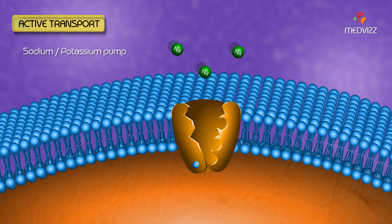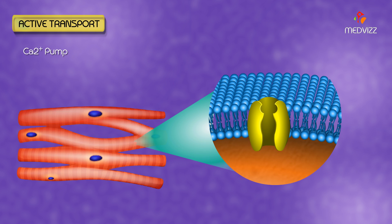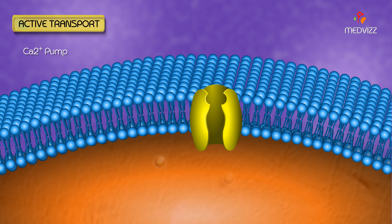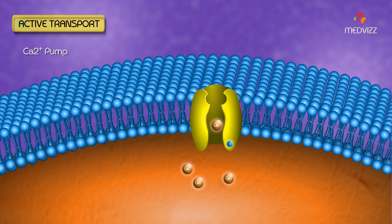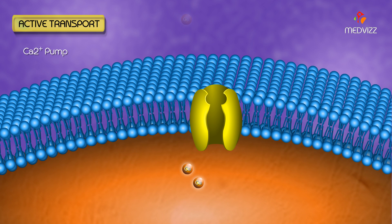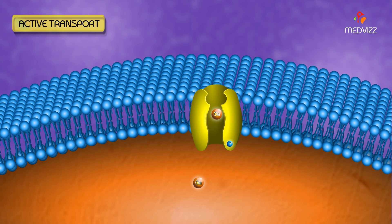Another example is the calcium ATPase pump in muscle cells, which removes calcium from the cell into the extracellular space at the expense of ATP hydrolysis during muscle relaxation.